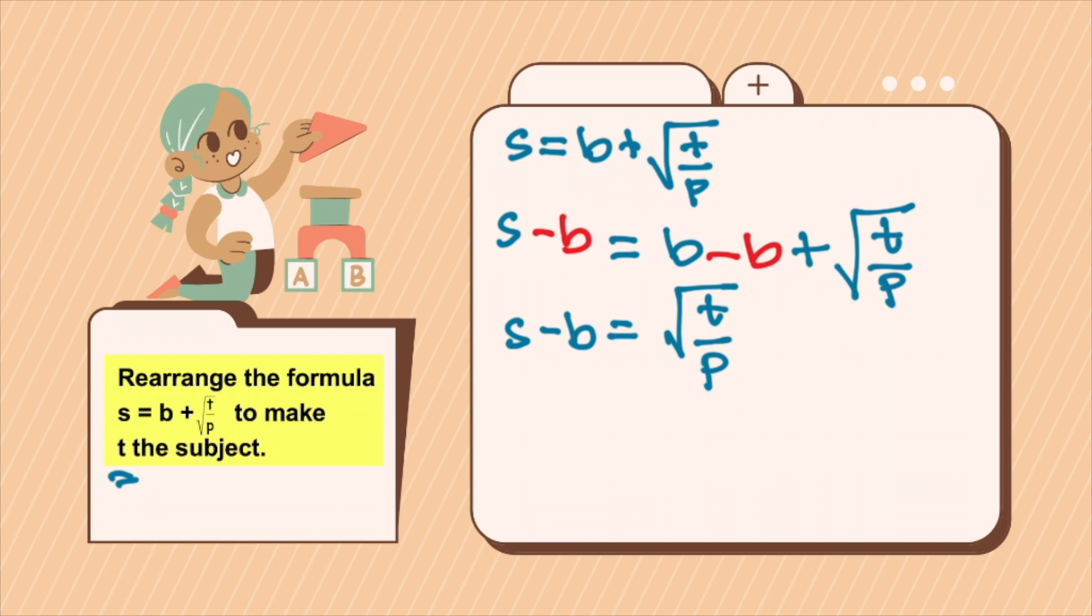Then we square both sides of the equation. You will have s minus b bracket square equals square root and square cancels out t over p. Now since you need t, you have to multiply or rearrange by multiplying it with p on the other side. So we move this p.